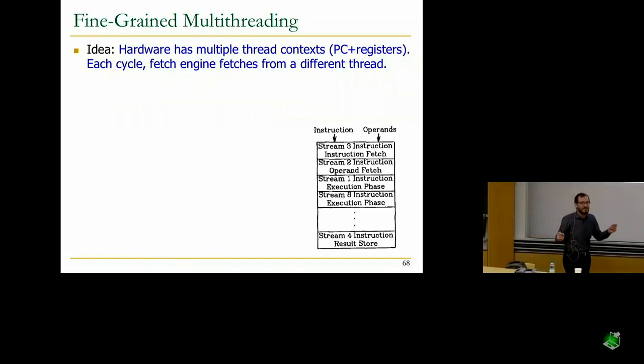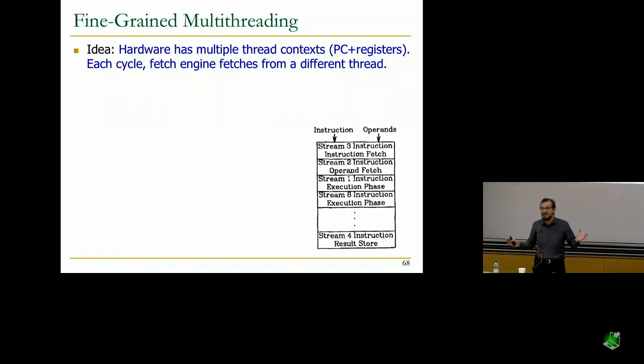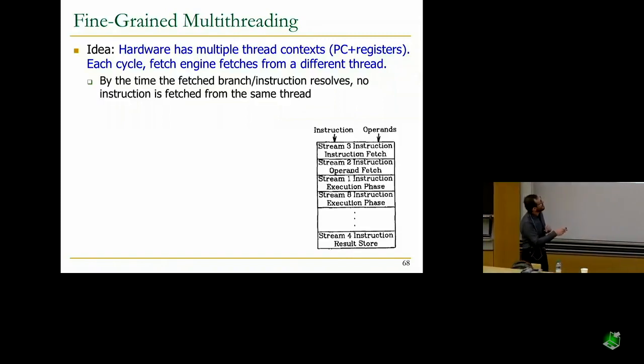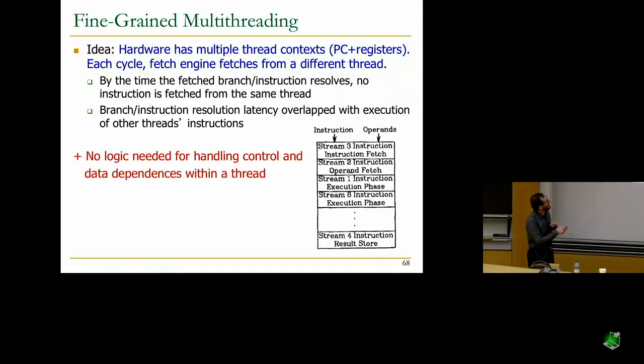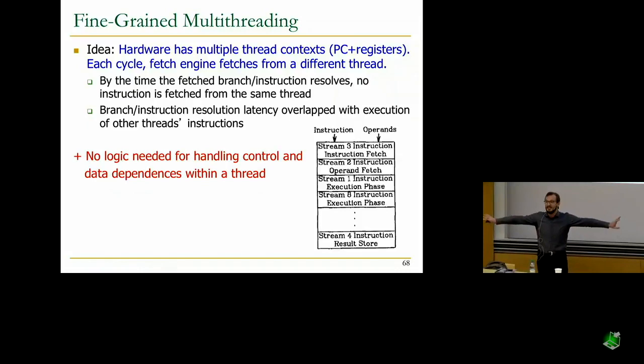If you don't have two instructions from a single thread, there's no need to check for data dependencies within a thread. There's no need to predict branches because you're not going to fetch from this thread until the branch is resolved. By the time the branch instruction resolves, there's no instruction fetched from the same thread. The latency of resolution of a branch or any instruction that produces data is overlapped with the execution of other threads' instructions. There is no need for handling control and data dependencies within a thread. That's beautiful. You got rid of it.